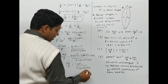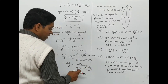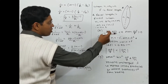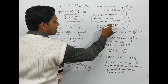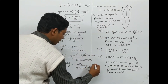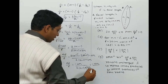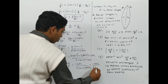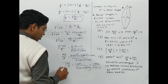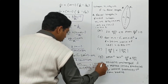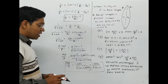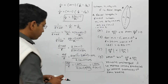Since delta n is very much smaller than n minus 1, we can neglect delta n in the denominator. So the simplified relation is: δf/f = -delta n / [2(n - 1)]. This is the key relation in terms of delta f by f.